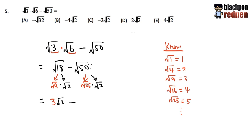We chose to break down square root of 50 as square root of 25 and square root of 2, because we know what square root of 25 is. Even though square root of 50 is the same as square root of 5 times square root of 10, none of them is a perfect square, so that's not useful. Square root of 25, we know that's 5. And then we maintain the square root of 2, just like this.